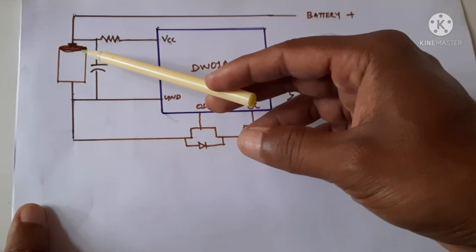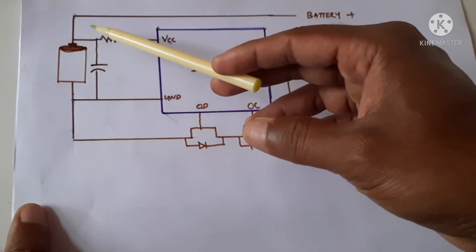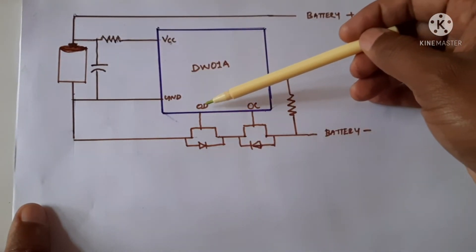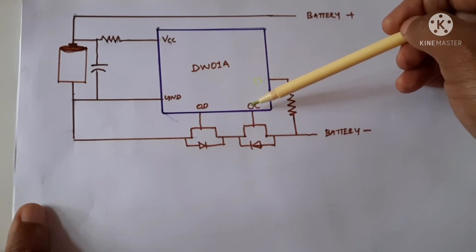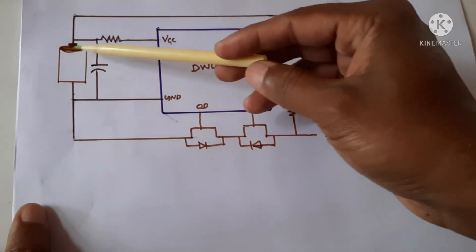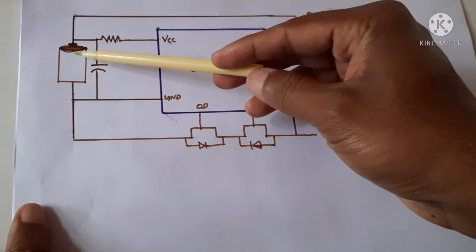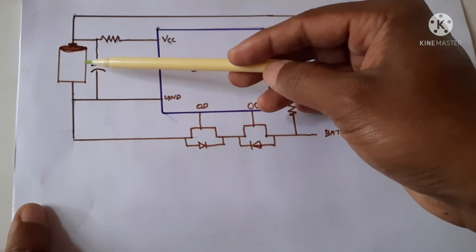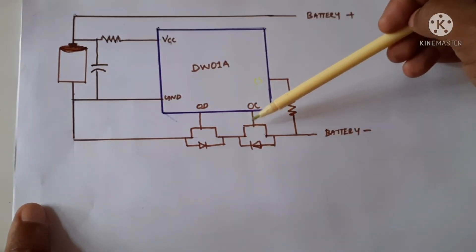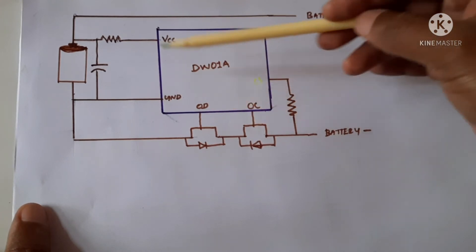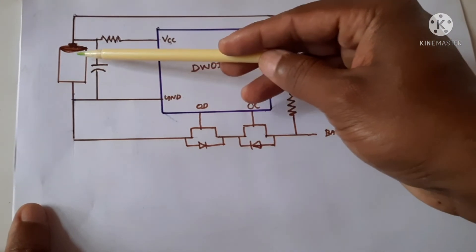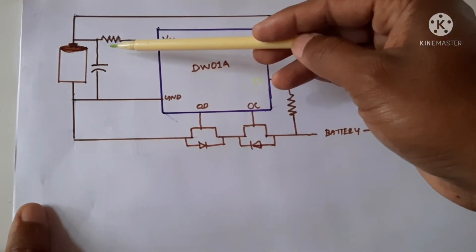When the voltage is more than 4.2 volts, the battery cuts the overcharge section. And after the battery discharges to 4.1 volts, then only again this section is ON. For again to turn ON this section, the battery voltage has to be less than 4.1 volts.